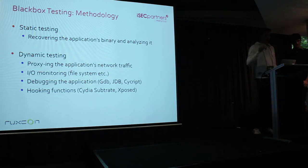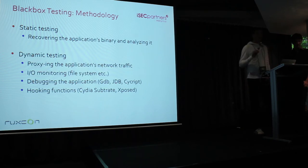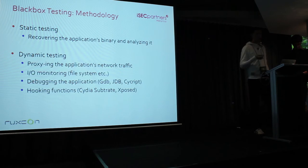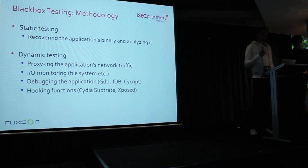In dynamic testing, you look at inputs and outputs — file system, network, and a few other things. You can debug the application using a debugger such as JDB to figure out how the app works, what it's doing, which functions it's calling. Lastly, you can hook functions, which means replacing a function with your own code to create some kind of instrumentation. We'll get into the details of that, because that's what our tool is using.